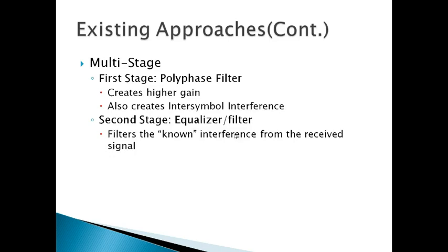The next approach is the multi-stage approach. The first stage is a polyphase filter, and this is used to create a beam of higher gain from the transmitter to the receiver. But by increasing this gain, they also increase inter-symbol interference. Basically, the signal interferes with itself because you have strong lobes and they'll cross-talk in these lobes.